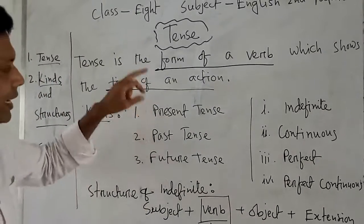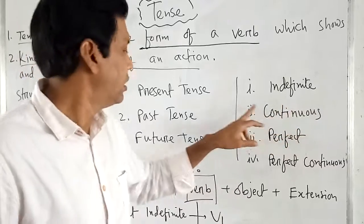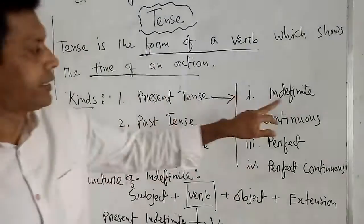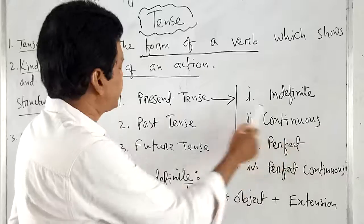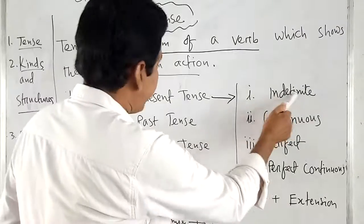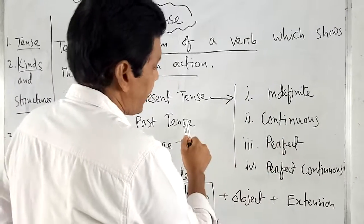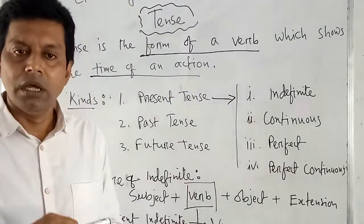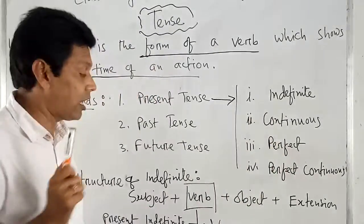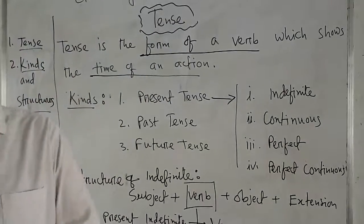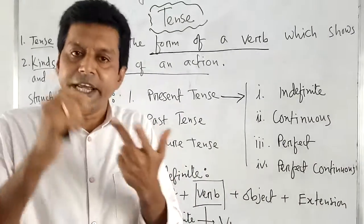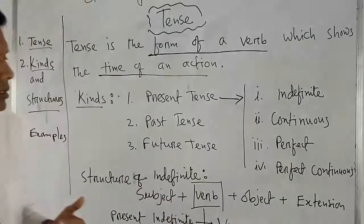Each type can be divided into four types. That is: present indefinite tense, present continuous tense, present perfect tense, and present perfect continuous tense. Similarly, past indefinite tense, past continuous tense, past perfect tense, and past perfect continuous tense. Again similarly, future indefinite tense, future continuous tense, future perfect tense, and future perfect continuous tense. Overall, tense can be classified into 12 types.